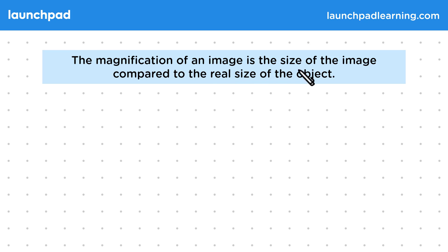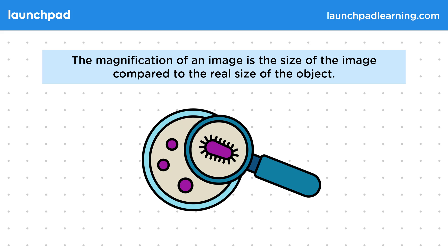The magnification of an image is the size of the image compared to the real size of the object. In this diagram, you can see that the magnifying glass has magnified an image of what's in the Petri dish. Even though the image is magnified, the size of the actual object hasn't changed. High magnifications can let us see things that we can't see with our naked eye.